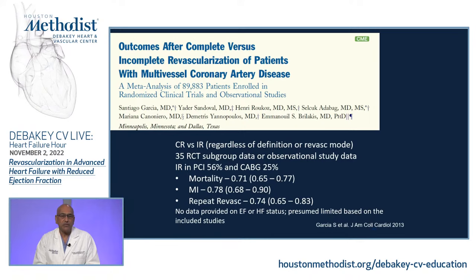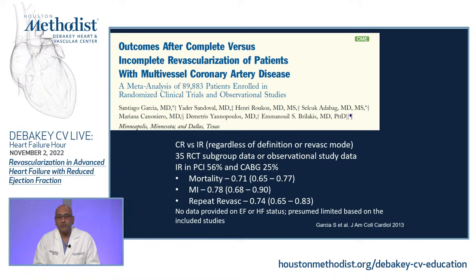Looking at what we can do better: complete revascularization has long been a goal. A massive meta-analysis of 89,000 patients studied complete versus incomplete revascularization — whether CABG or PCI — across 35 observational study subgroups. Incomplete revascularization occurred in 56% of PCI cases and 25% of CABG cases — a massive performance gap. Complete revascularization was associated with better mortality (hazard ratio 0.71), MI reduction (0.78), and repeat revascularization reduction (0.74), though data on EF or heart failure status were not available.